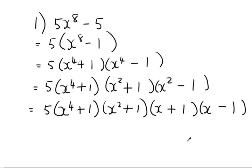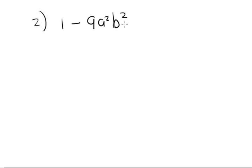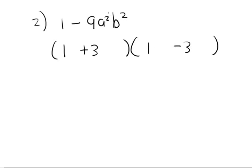We're going to move on to number 2 now. If you want to pause and work through the sum again, that's fine — it is a bit of a longer sum. Number 2: we've got 1 minus 9a²b². The answer is going to be plus and minus. The square root of 1 is 1. Then we take the square root of 9a²b² — the square root of 9 is 3, the square root of a² is a, and the square root of b² is b. So the answer is (1 + 3ab)(1 - 3ab). I can't factorize any further.